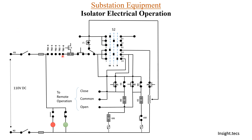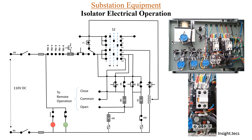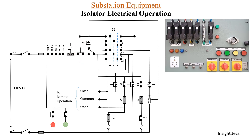Next is the NC contact of the overload relay. On the back side of the control panel door you can see the two contactors — OC and CC — and below them the overload relay. The NC contact of the overload relay means: only if the overload relay is not picked up, operation of the isolator is possible. If the overload relay is picked up, electrical operation will not be possible; if it is not picked up, the DC will move forward.